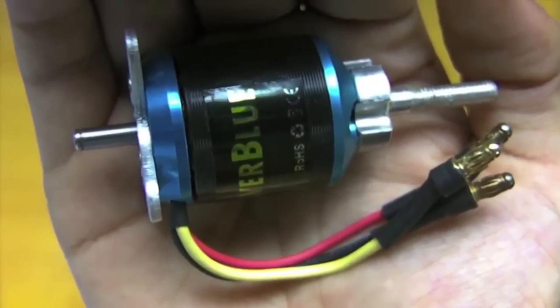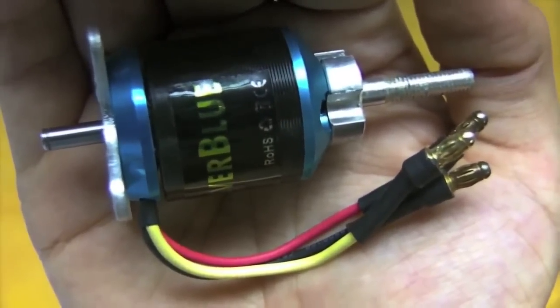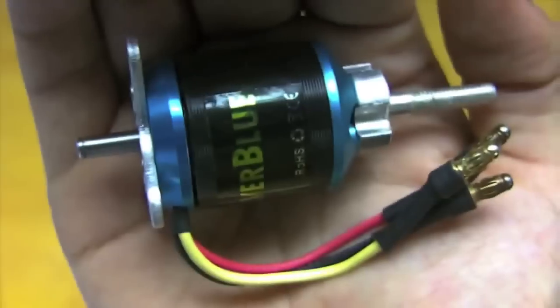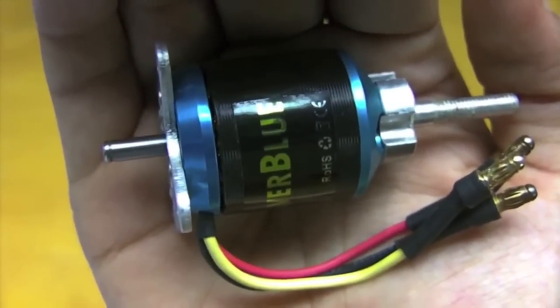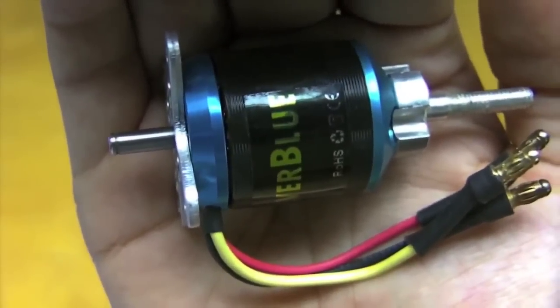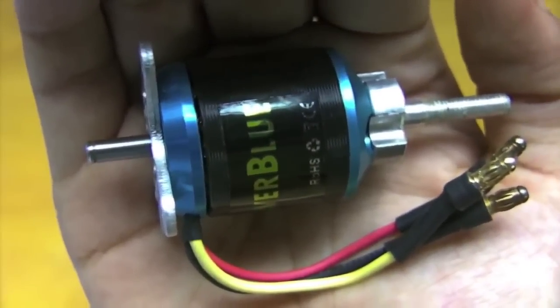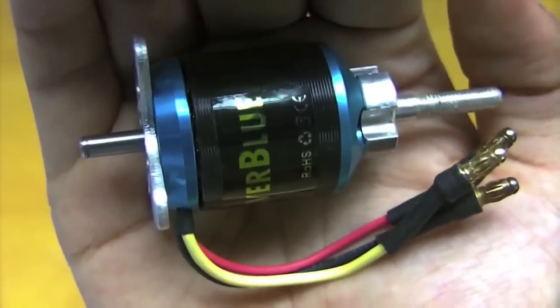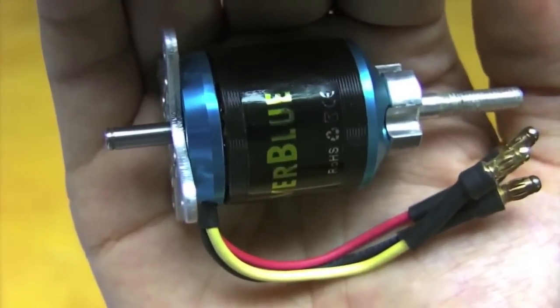These can be fairly expensive, just like the motors themselves, and some can only control the motor in one direction. Those are usually designed for RC helicopters and planes, where you don't want the motor to go in reverse at all. I guess it would be possible to design one yourself, but that would be a lot of work, so I'm saving that for a later project.